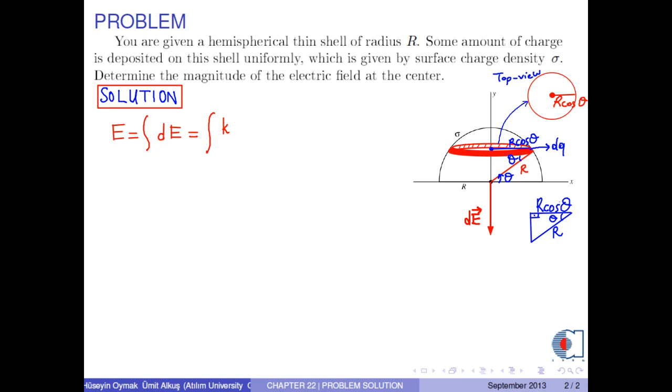dE is calculated as k times dq over R squared. In order to calculate this integral, let us find an expression for dq in terms of theta.